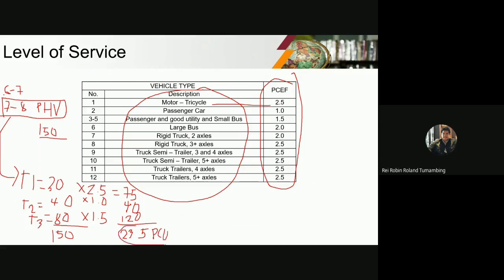So that is the total volume. Then, depending on the capacity of the road, you can compute the VCR. The volume (V) over capacity (C) equals 235 over the capacity — depending on the type and width of the road being analyzed.